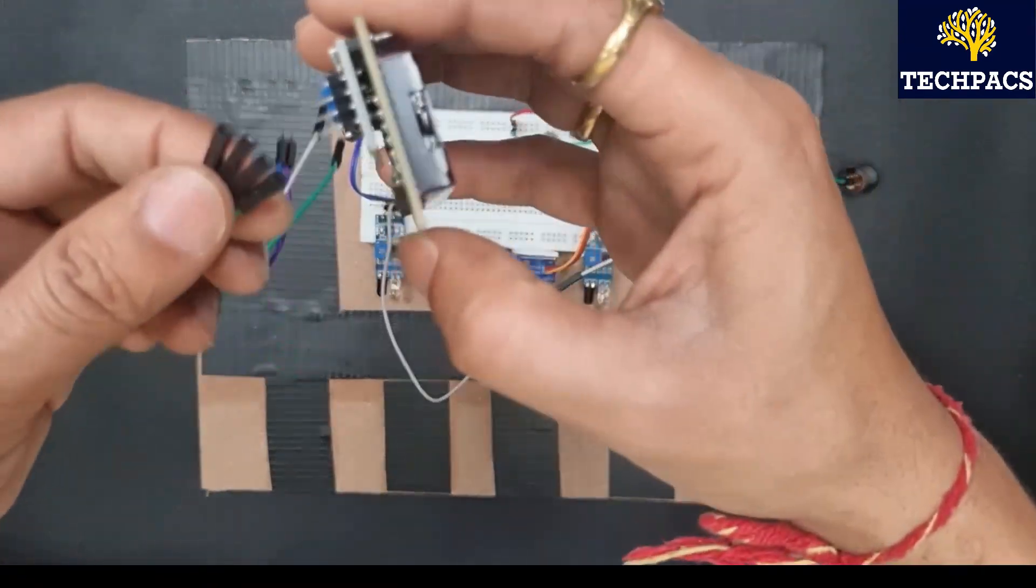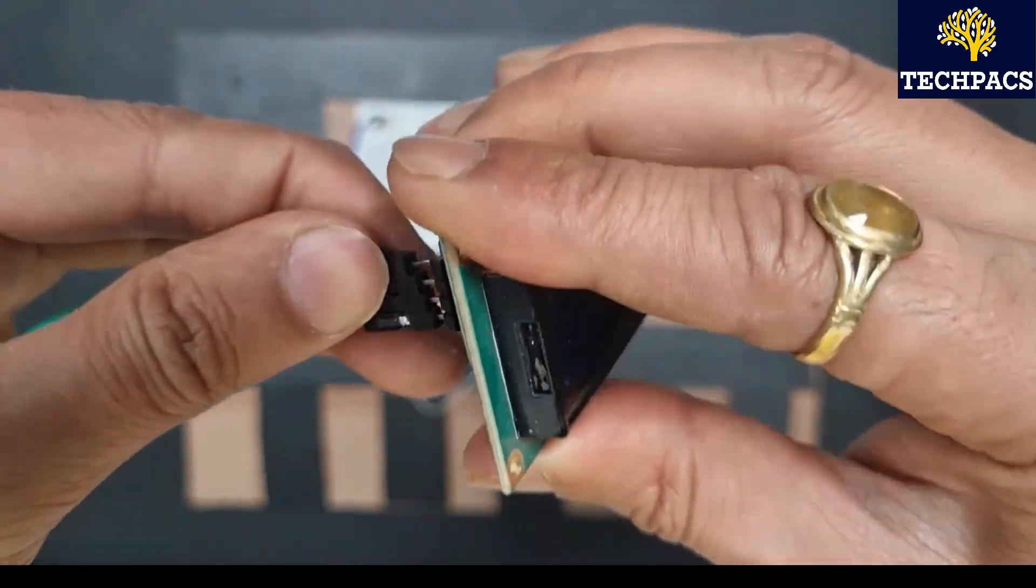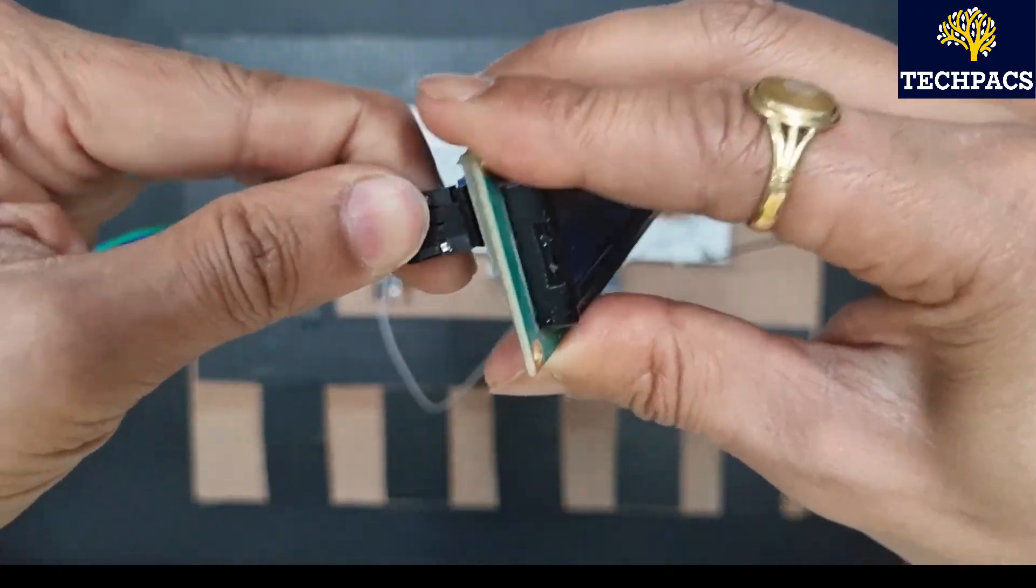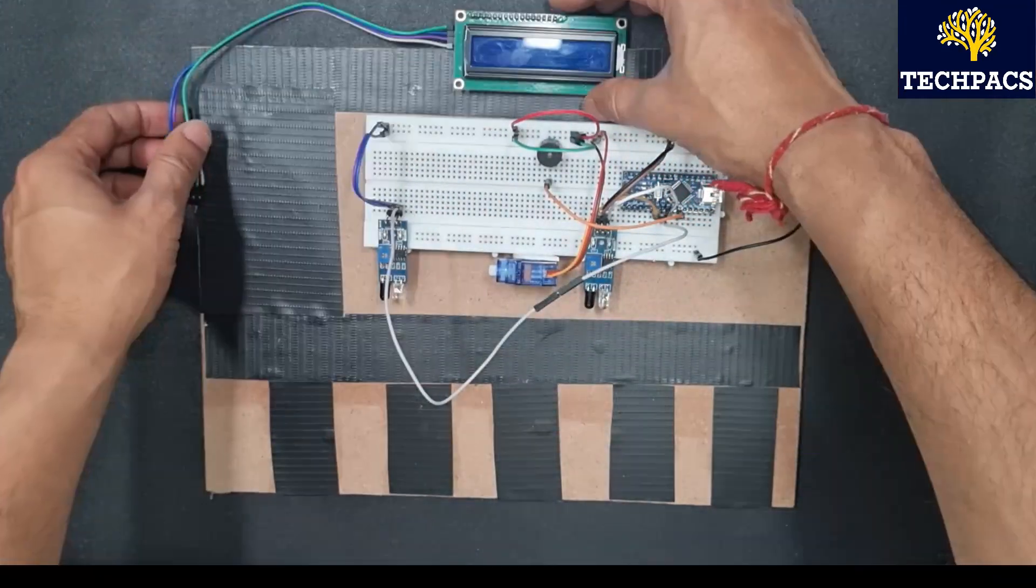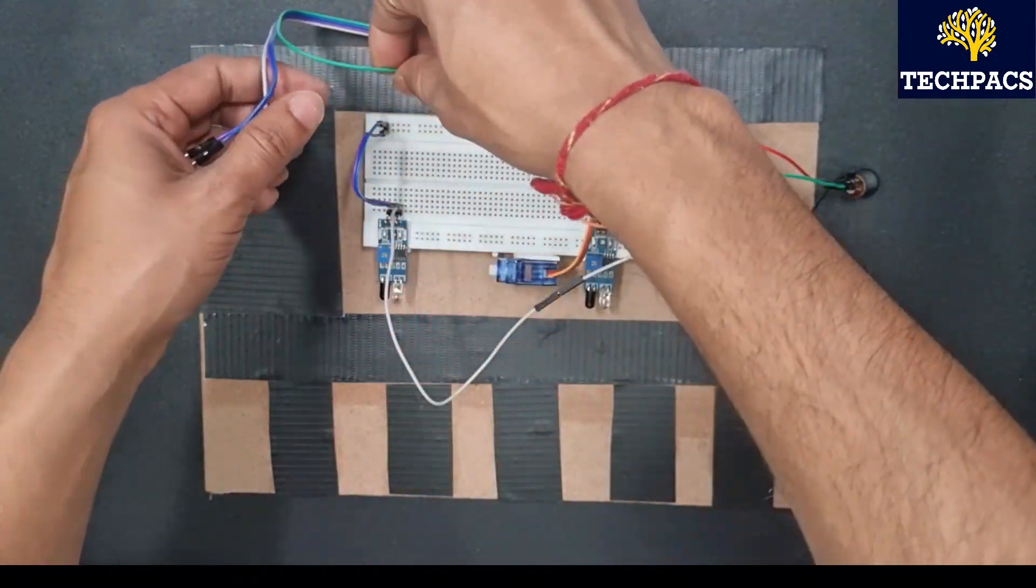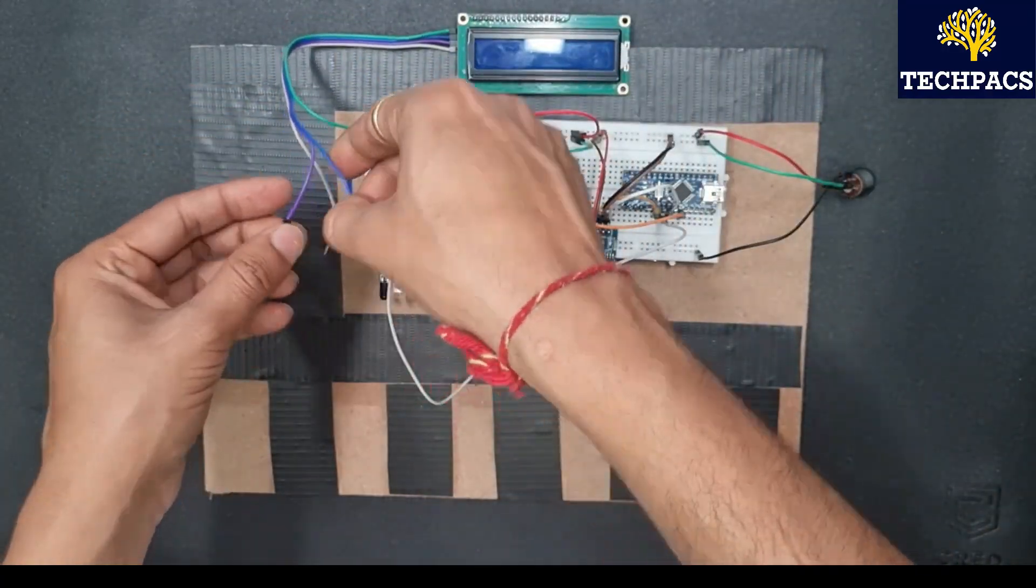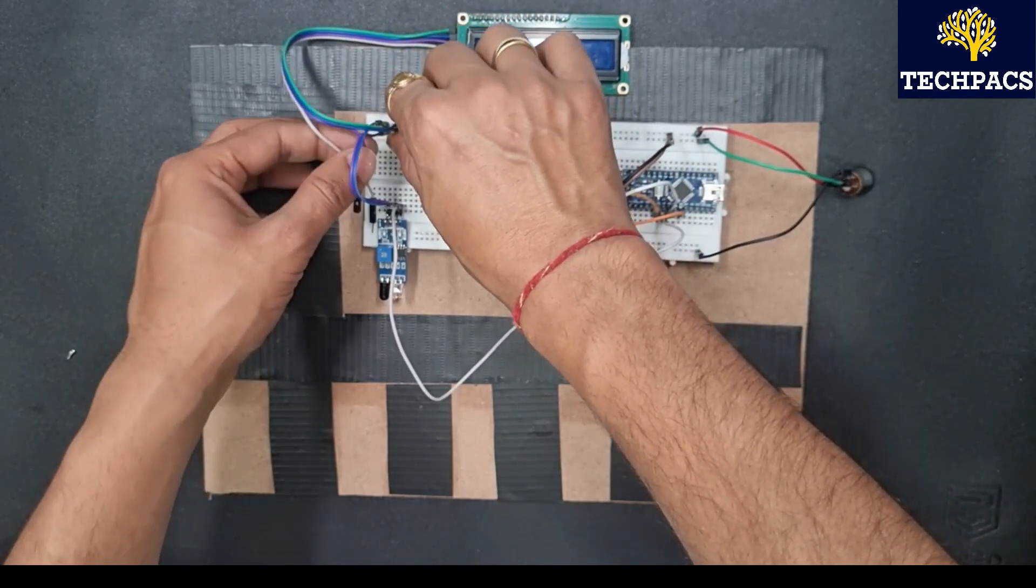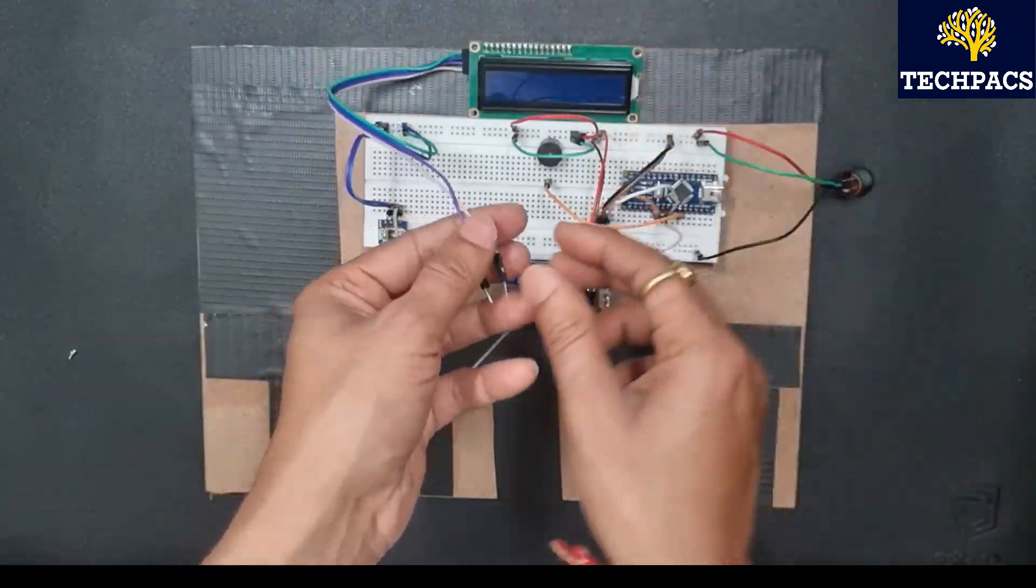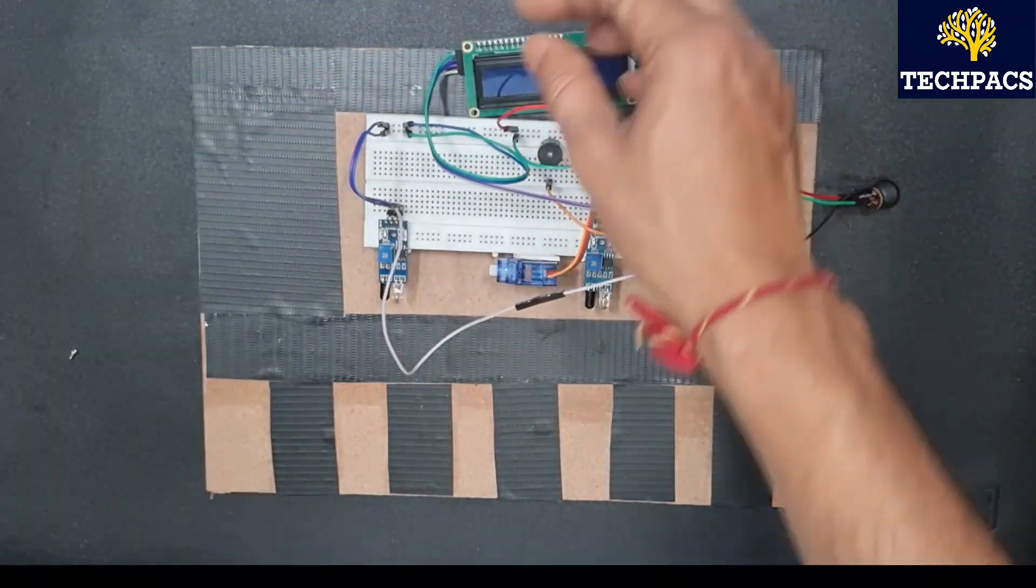Now we'll go for the connections of the LCD. So connecting the four pins of the LCD, making the connections on the breadboard here. Power supply, grounding, and connections with the microcontroller.